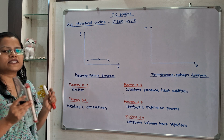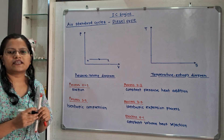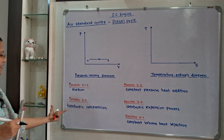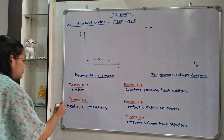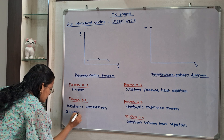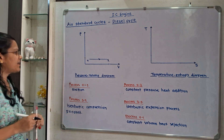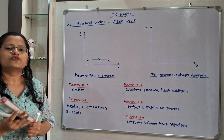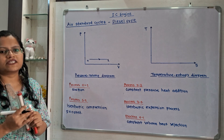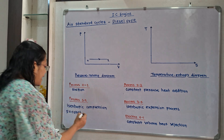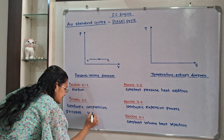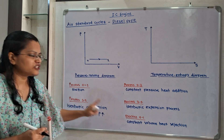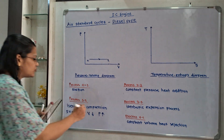The next process is the isentropic compression process, where air is getting compressed inside the piston-cylinder arrangement and entropy remains constant — so S is equal to constant. Because of compression, volume decreases, and as volume decreases, pressure increases, and because of the increase in pressure, temperature also increases.